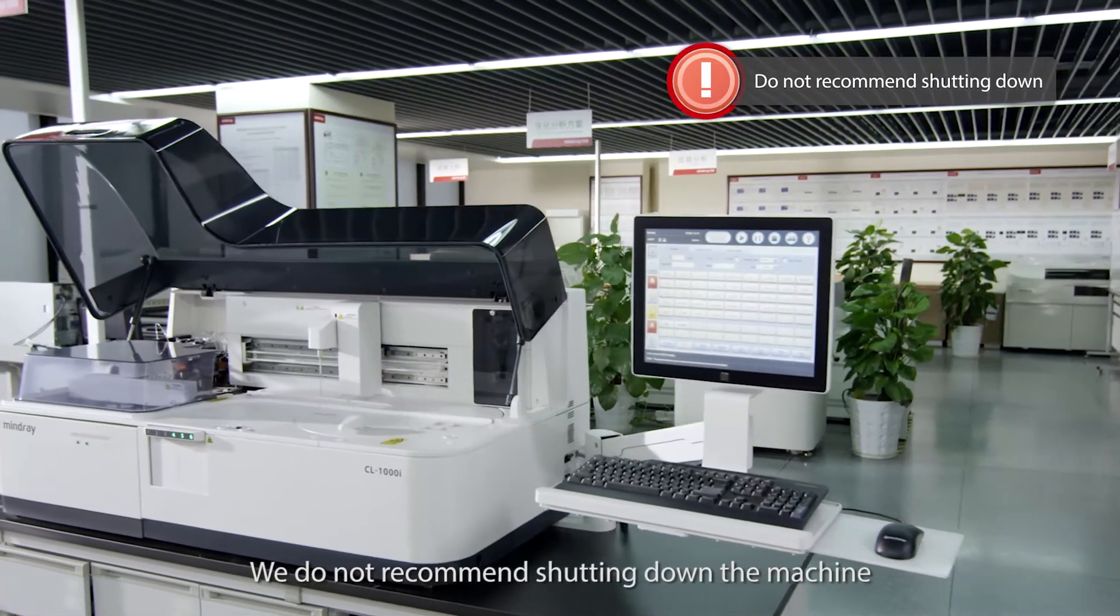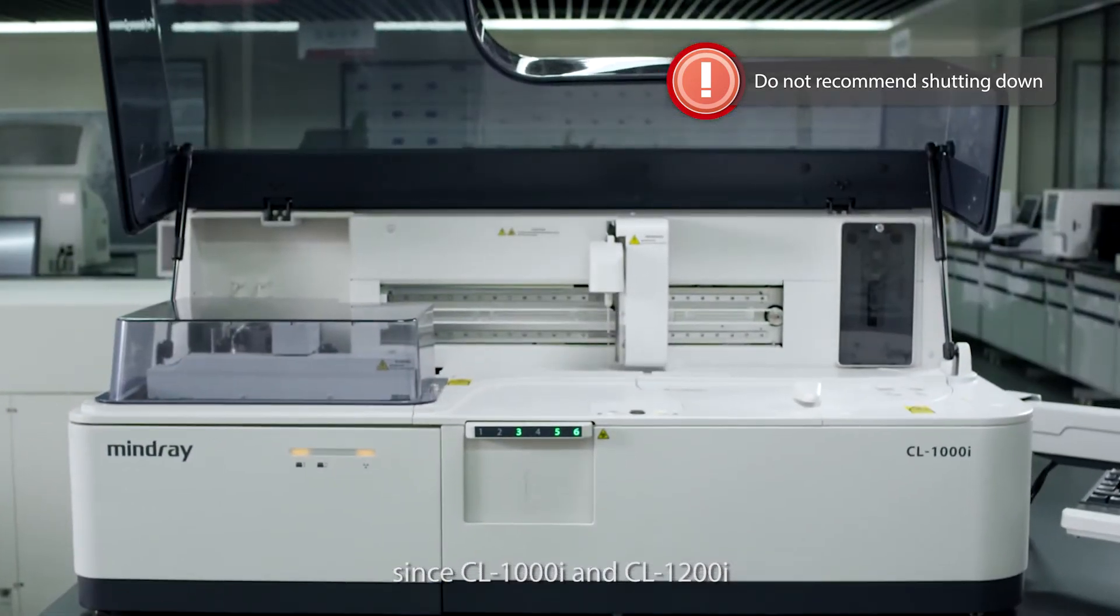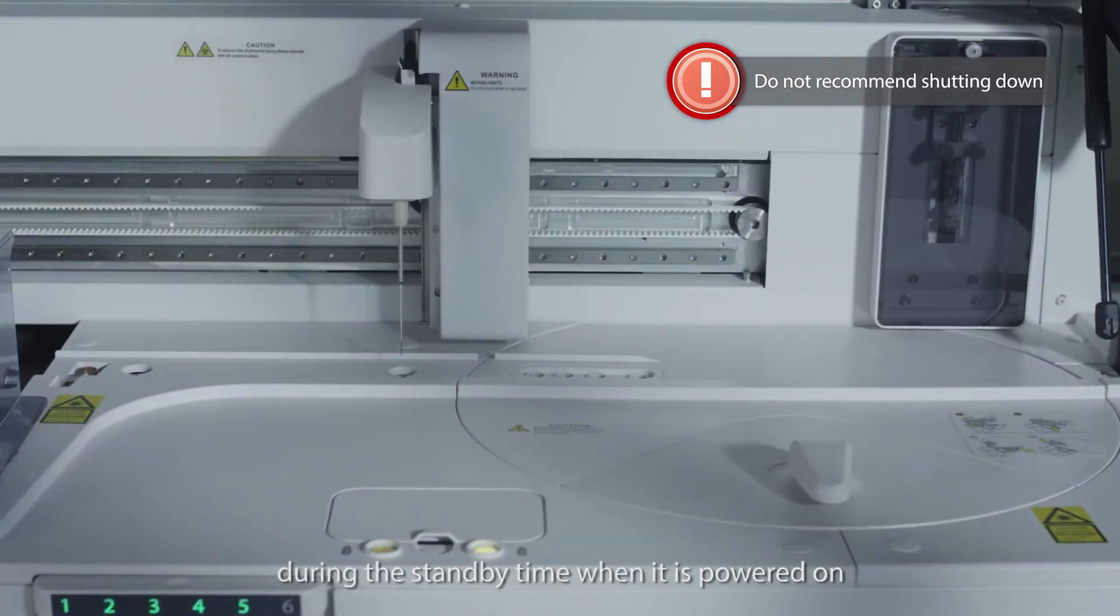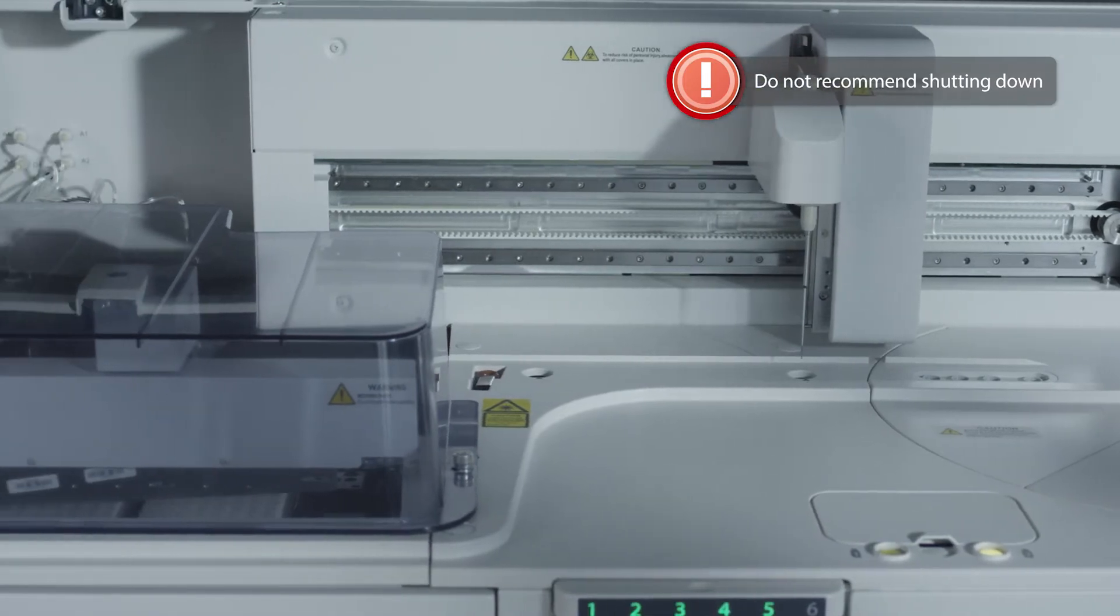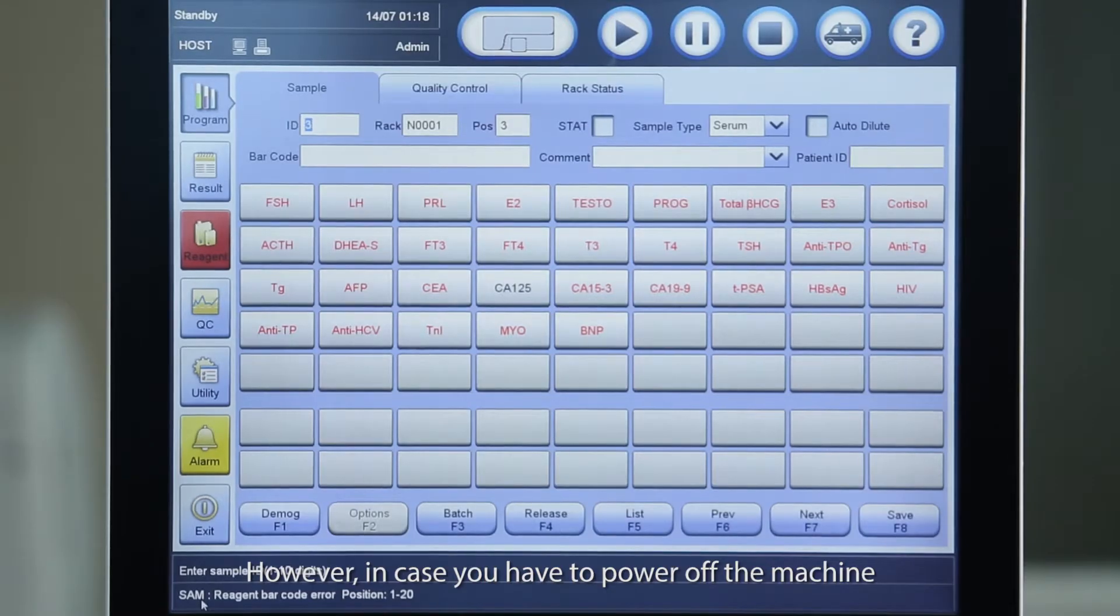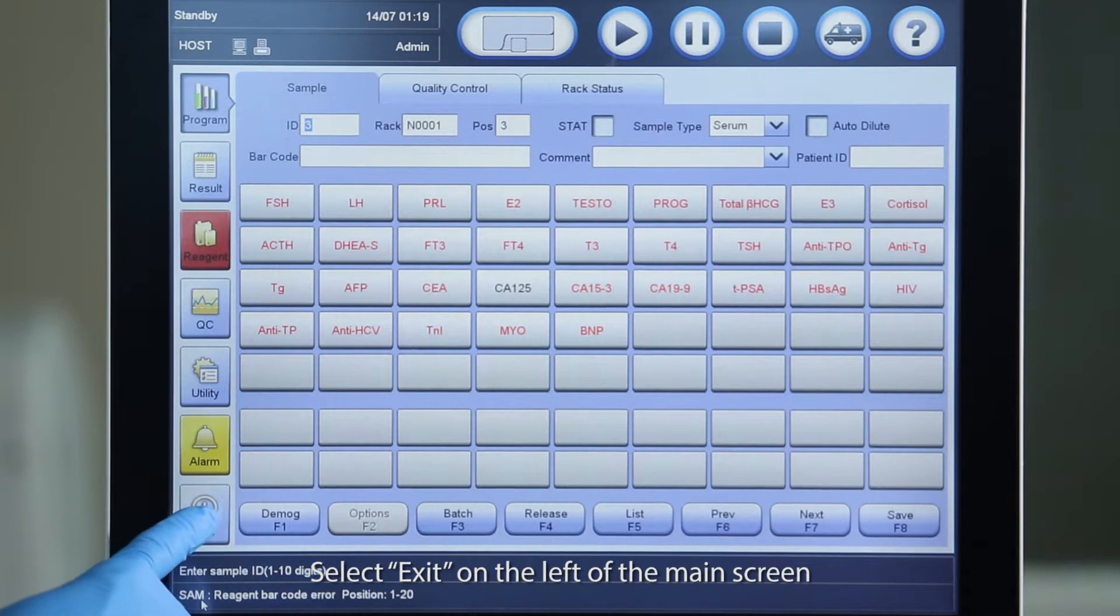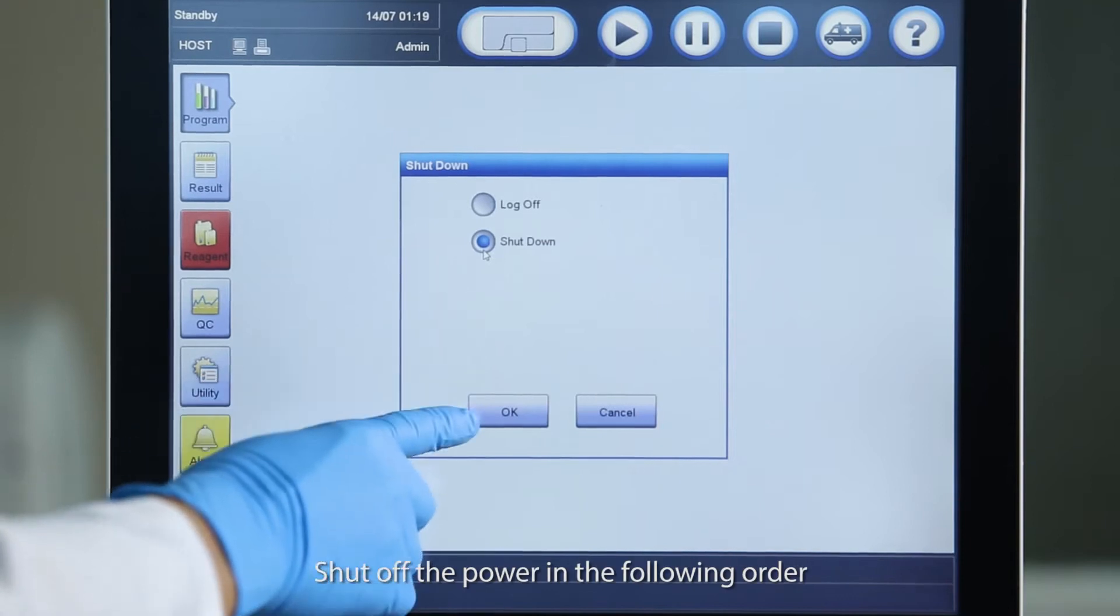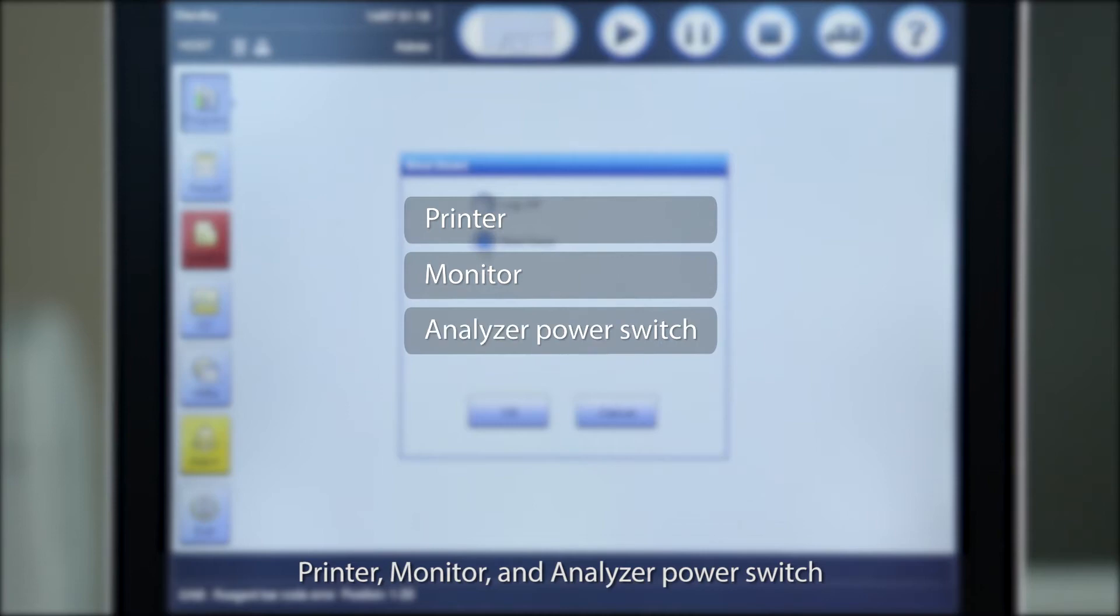We do not recommend shutting down the machine since CL1000i and CL1200i can run cleaning process and system check automatically during the standby time when it is powered on, which can ensure the performance of the system. However, in case you have to power off the machine, please make sure that the system is in standby status. Select exit on the left of the main screen and then select shut down. Shut off the power in the following order: printer, monitor and analyzer power switch.